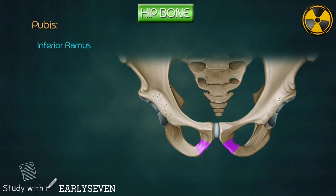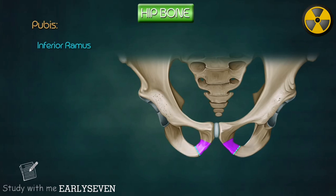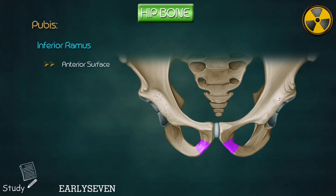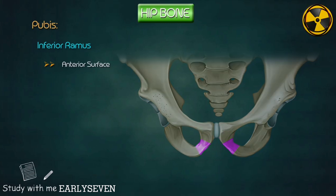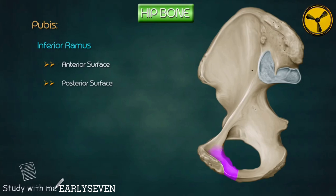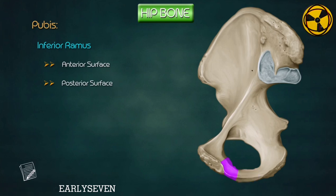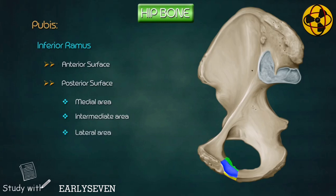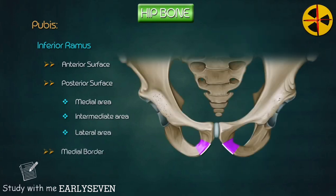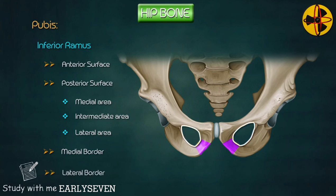Inferior ramus. It is the part of the pubic bone which extends backwards from the body and unites with the ramus of the ischium on the medial side of the obturator foramen. It has two surfaces and two borders. The anterior surface is continuous with the anterior surface of the body, directed downwards, forwards, and laterally. The posterior surface is continuous with the posterior surface of the body above and with the posterior surface of the ramus of the ischium below, divided into three areas — medial, intermediate, and lateral — by two blunt ridges. The medial border is more prominent in males. The lateral border forms the medial boundary of the obturator foramen and gives attachment to the obturator membrane.